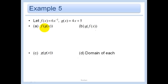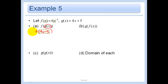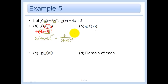Now doing f of g of x algebraically. g of x is 4x plus 5, and I'm doing f to that. The original f says f of x equals 6x to the negative 2. So I replace x with 4x plus 5: I get 6 times (4x plus 5) to the negative 2. Since this is a negative exponent, the 6 stays up top but (4x plus 5) goes to the denominator as a positive exponent: 6 divided by (4x plus 5) squared.